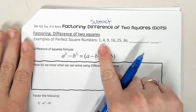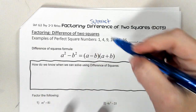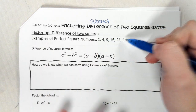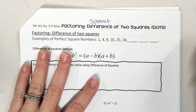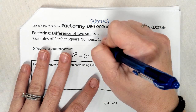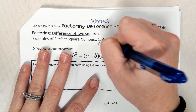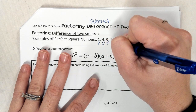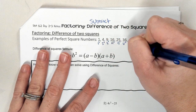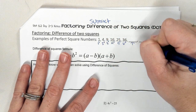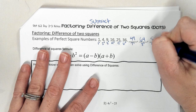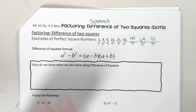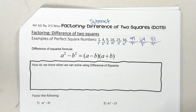Difference of two squares — examples of perfect square numbers. We have 1, 4, 9, 16, 25, 36. We know these are perfect square numbers because 1 squared, 2 squared, 3 squared, 4 squared, 5 squared, 6 squared. So what's 7 squared? 49. What's 8 squared? And what's 9 squared? Does it stop, or does it keep going forever? It keeps going forever.